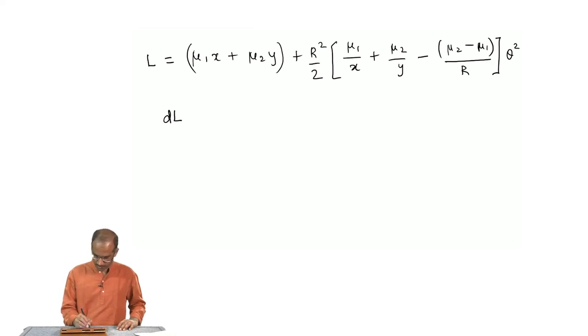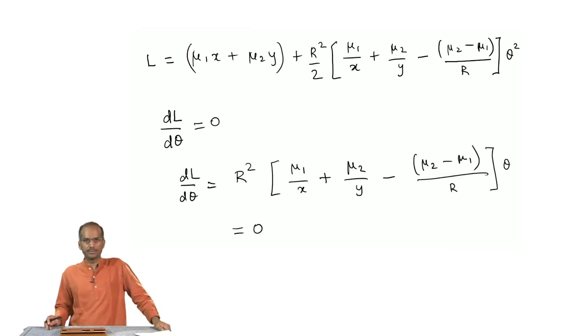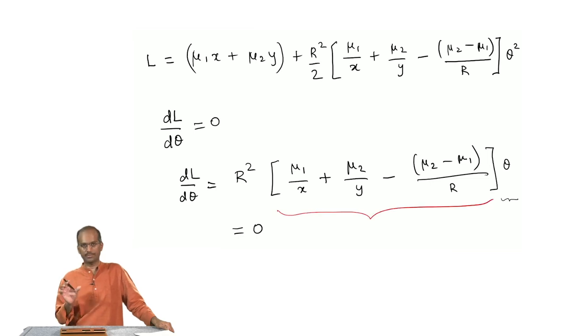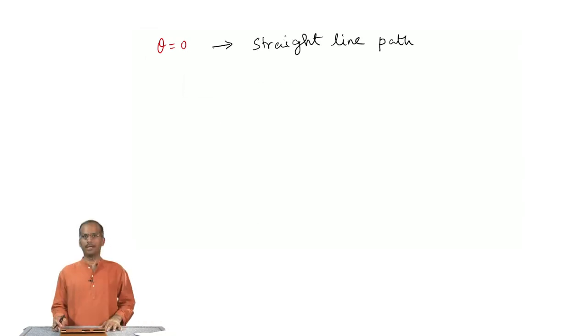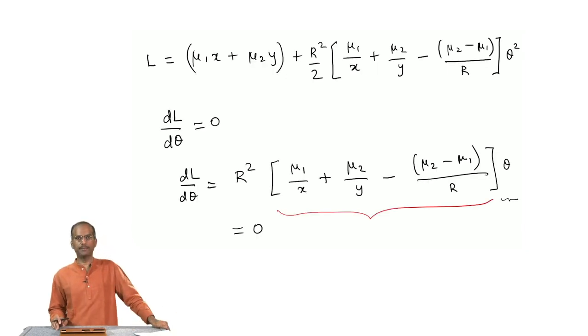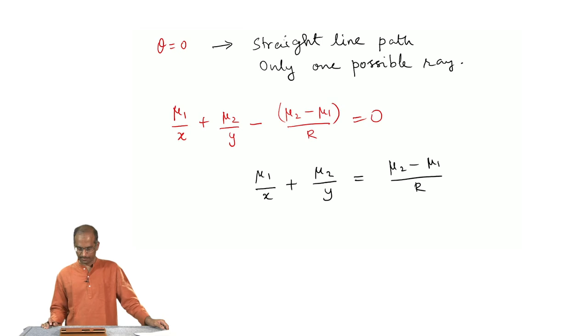I want to find out now dL by dtheta and set it equal to 0. R is the radius of curvature, so it is not equal to 0. What could be 0 are only these two things: one is it is possible that theta could be 0 or this entire expression within the square brackets, that could be 0. Theta equal to 0 gives me a straight line path and there is only one possible straight line path. The other way by which dL by dtheta can be 0 is when this quantity within the square brackets is 0. This is what we have obtained from the condition that dL by dtheta should be equal to 0.